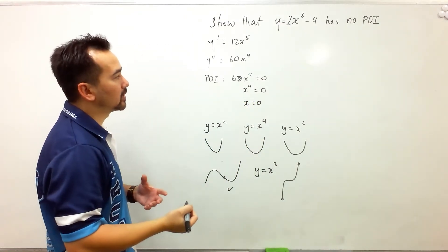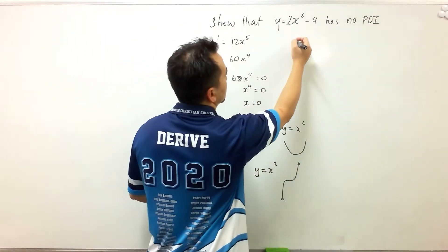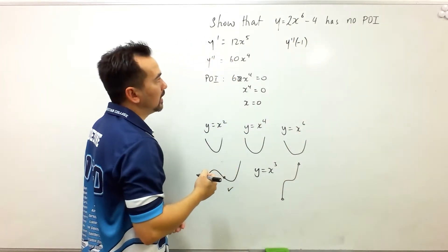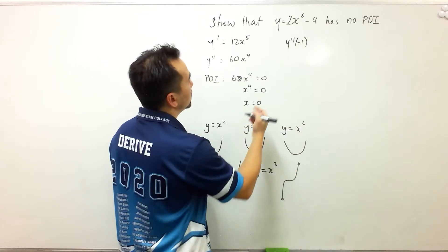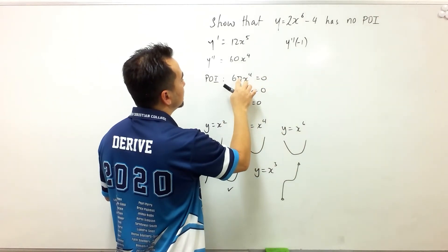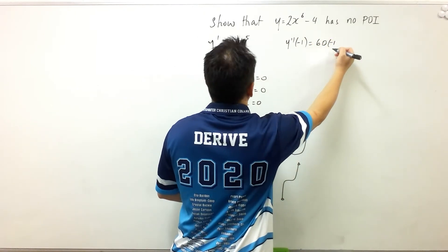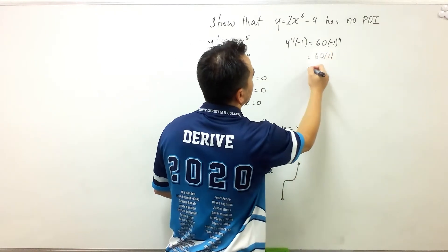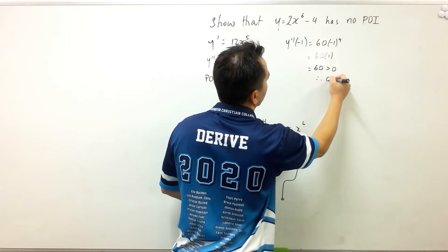Right, now let's have a look at the concavities. I need a value to the left of 0, so let's choose negative 1. And let's see what the concavity is there. Substituting negative 1 into 60 times negative 1 to the power 4, we get 60 times 1, which is 60, which is positive. Therefore, it's concave up.